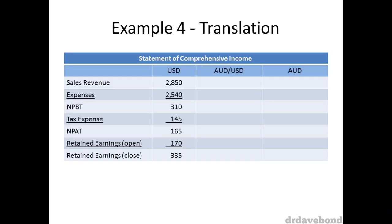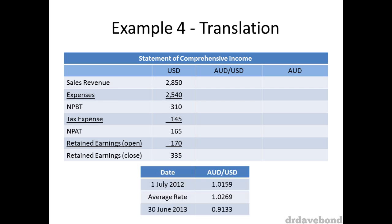What we have here is a simplified statement of comprehensive income, as well as information about the exchange rate at the start and at the end of the period, as well as the average rate. The first thing to do is to determine which exchange rate you use for which item. We ignore the totals here — net profit before tax, net profit after tax, retained earnings close. The average rate gets used for sales revenue, expenses, and tax expense.